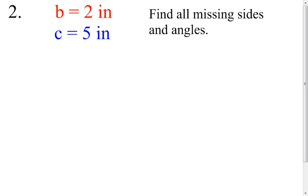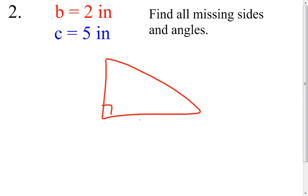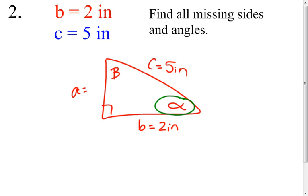Moving on to number two. You have to draw your triangle first. Side B is 2 inches, side C is 5 inches, and side A is unknown. Alpha has to be opposite of A, and beta has to be opposite of B. I want to figure out one of the two angles first. I'll find alpha — I need to pick two sides I already know since the angle is my unknown. I can't pick side A because I don't know it, and even if I used the Pythagorean theorem to find it, that would be a rounded value, so stay away from rounded values if you can.